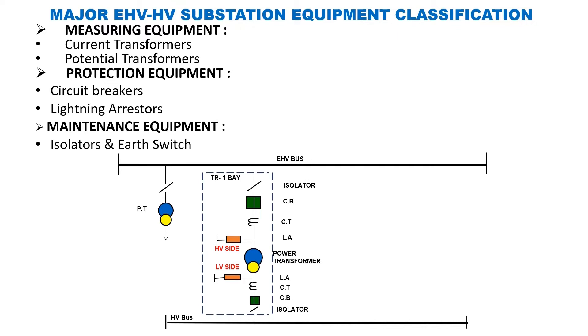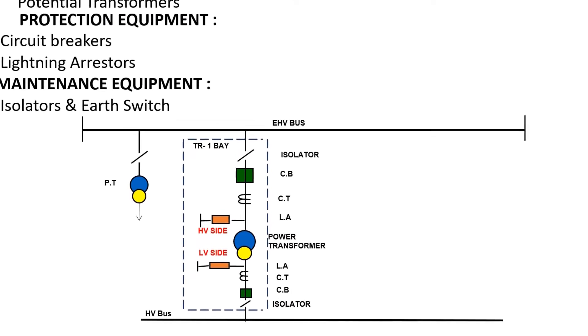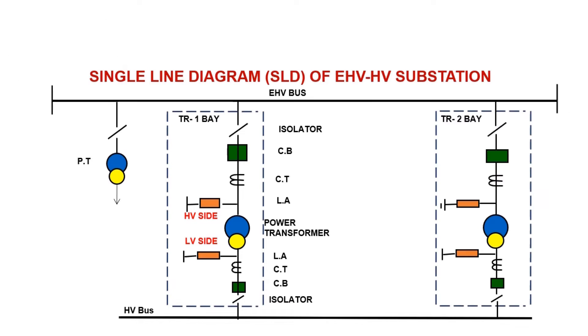Similarly, a substation can have a number of transformer bays such as TR2 and TR3, and their SLD will be as shown here.